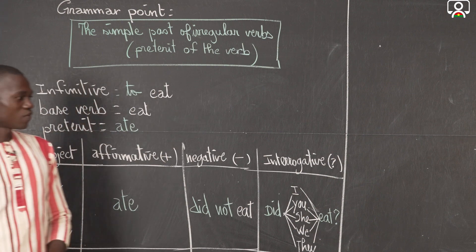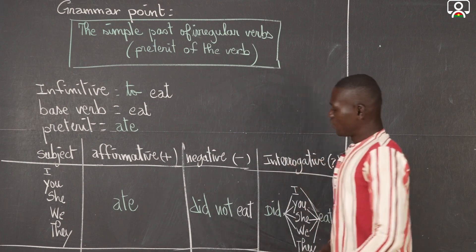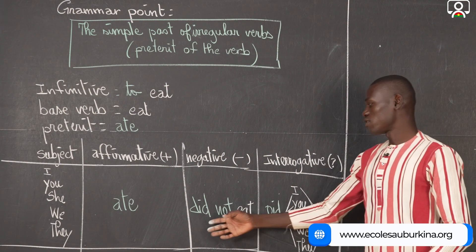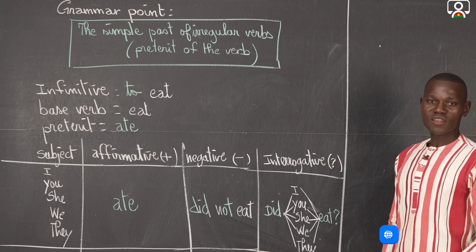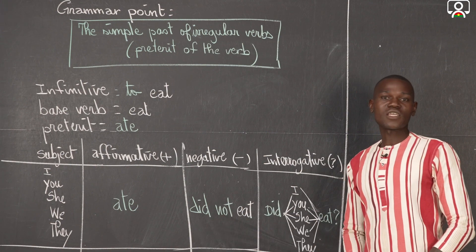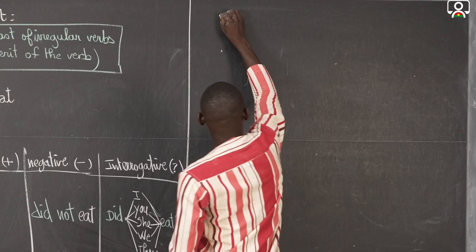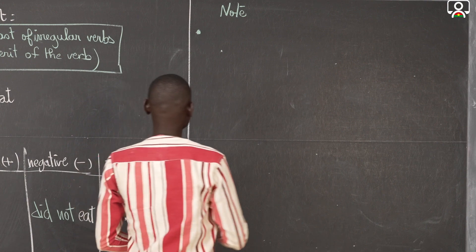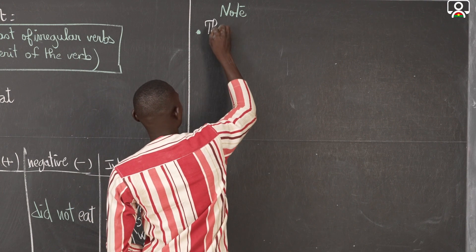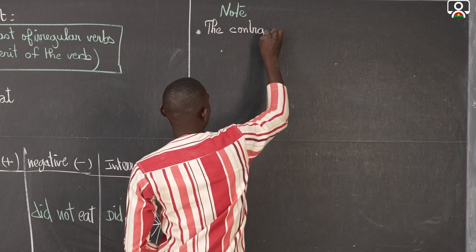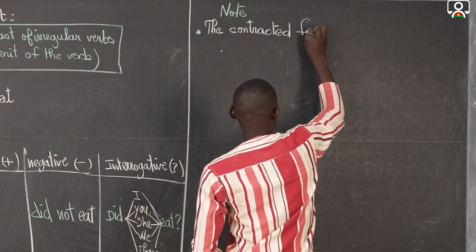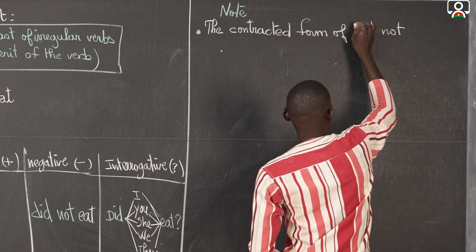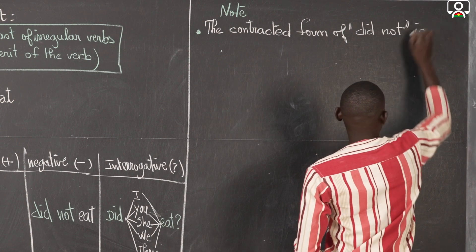Now, a note for you. In the previous lesson we used did not, and today again we use did not. But what is the contracted form in oral? The contracted form of did not is didn't.